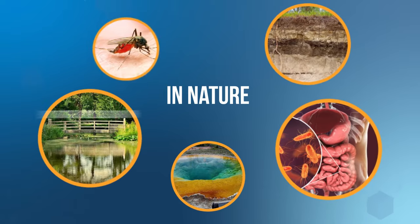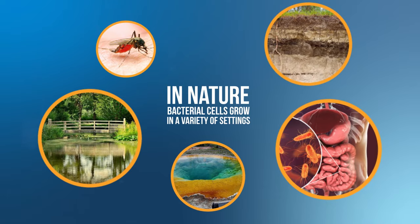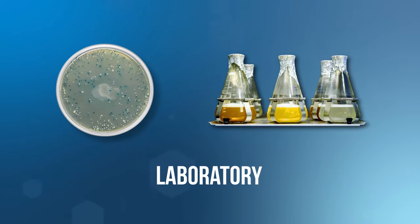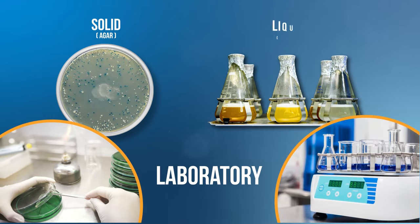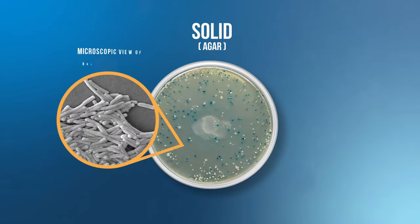In nature, bacterial cells grow in a variety of settings. In a laboratory, bacterial cells are typically grown either on a solid medium called agar or in liquid broth. Bacterial cells that replicate on a solid surface pile on top of other cells, forming a visible spot or colony.